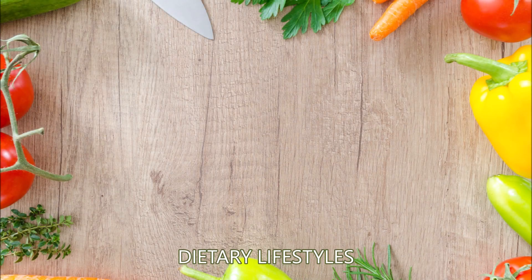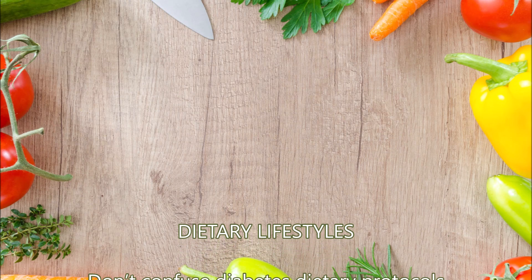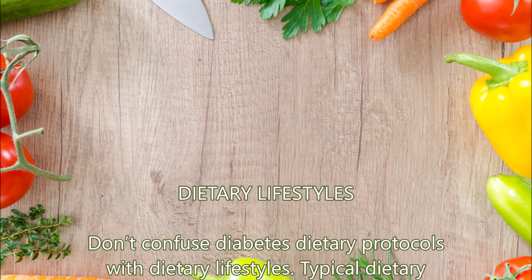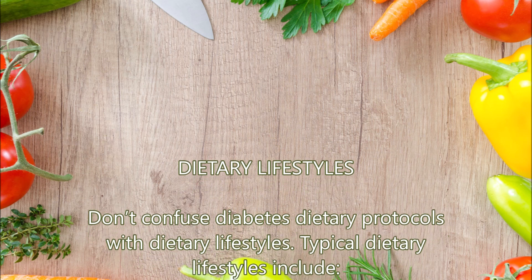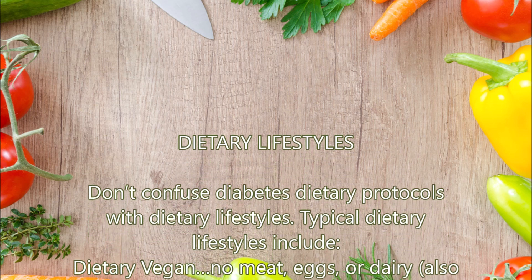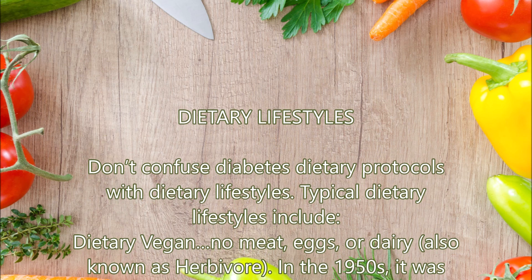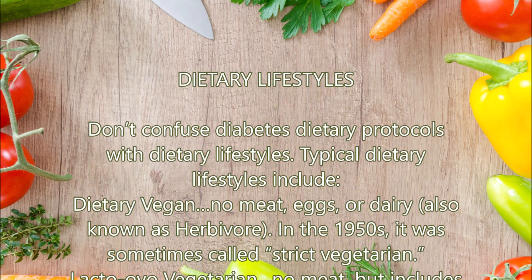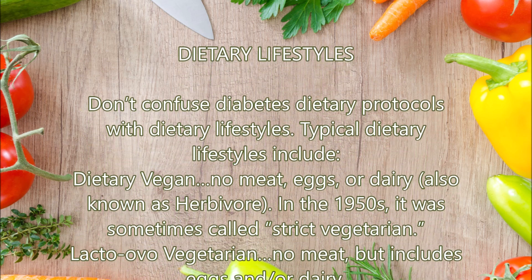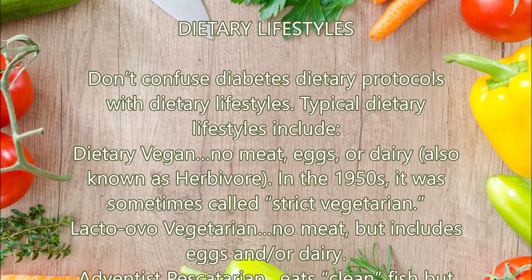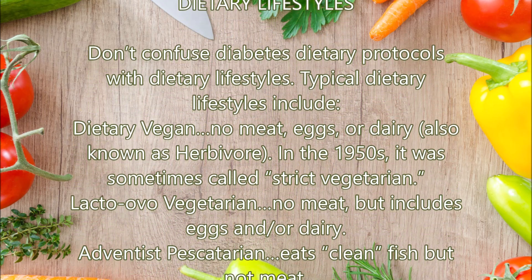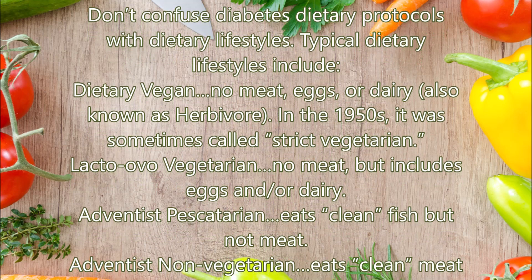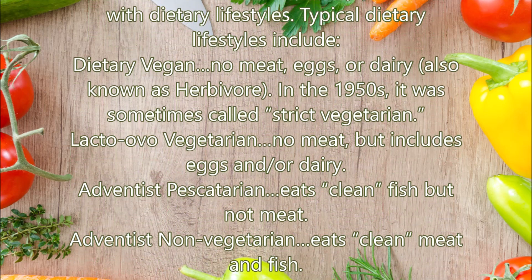Dietary Lifestyles. Don't confuse diabetes dietary protocols with dietary lifestyles. Typical dietary lifestyles include: Dietary Vegan — no meat, eggs, or dairy, also known as herbivore. In the 1950s it was sometimes called strict vegetarian. Lacto-ovo-vegetarian — no meat, but includes eggs and/or dairy.